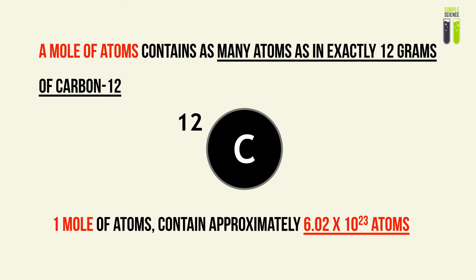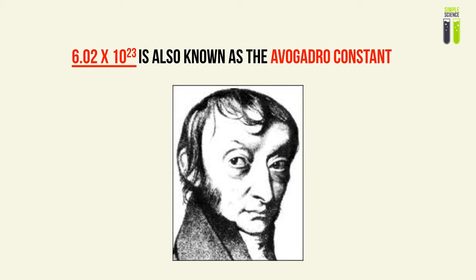The number of atoms in one mole is derived from the standard idea of carbon-12, where one mole of atoms will contain as many atoms as there are in exactly 12 grams of carbon-12. Carbon-12 has a relative atomic mass of 12.00000 grams per mole. So one mole of atoms will therefore contain 6.02 times 10 to the 23 atoms. The man who deduced this number is Amadeo Avogadro, and therefore this number — 6.02 times 10 to the 23 — is known as the Avogadro constant.